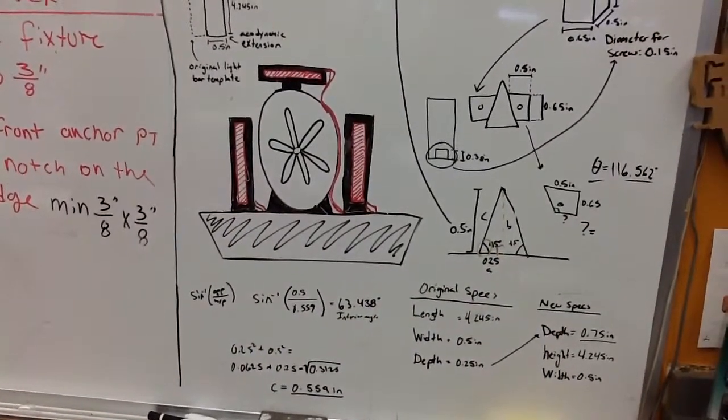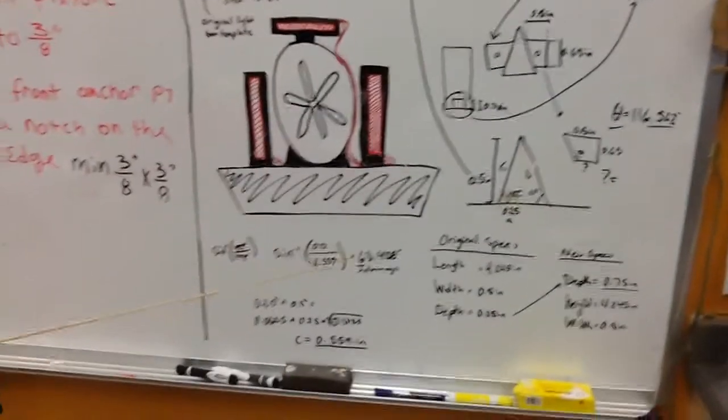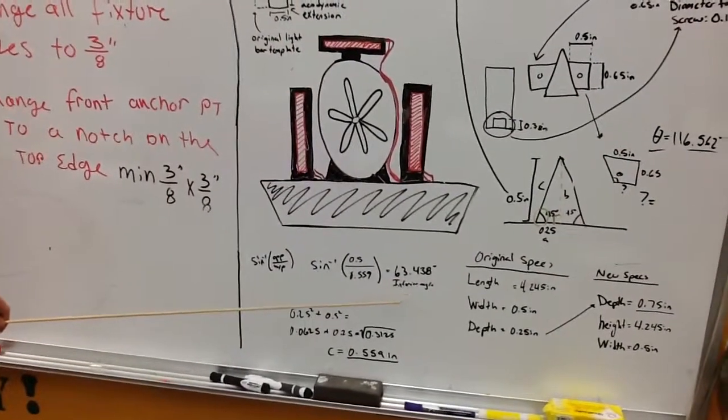So then I decided we needed to do a little bit of trig to figure out what side C was, so we could figure out the angle. I went through all this trig to figure out the interior angles there: 63.4 degrees.